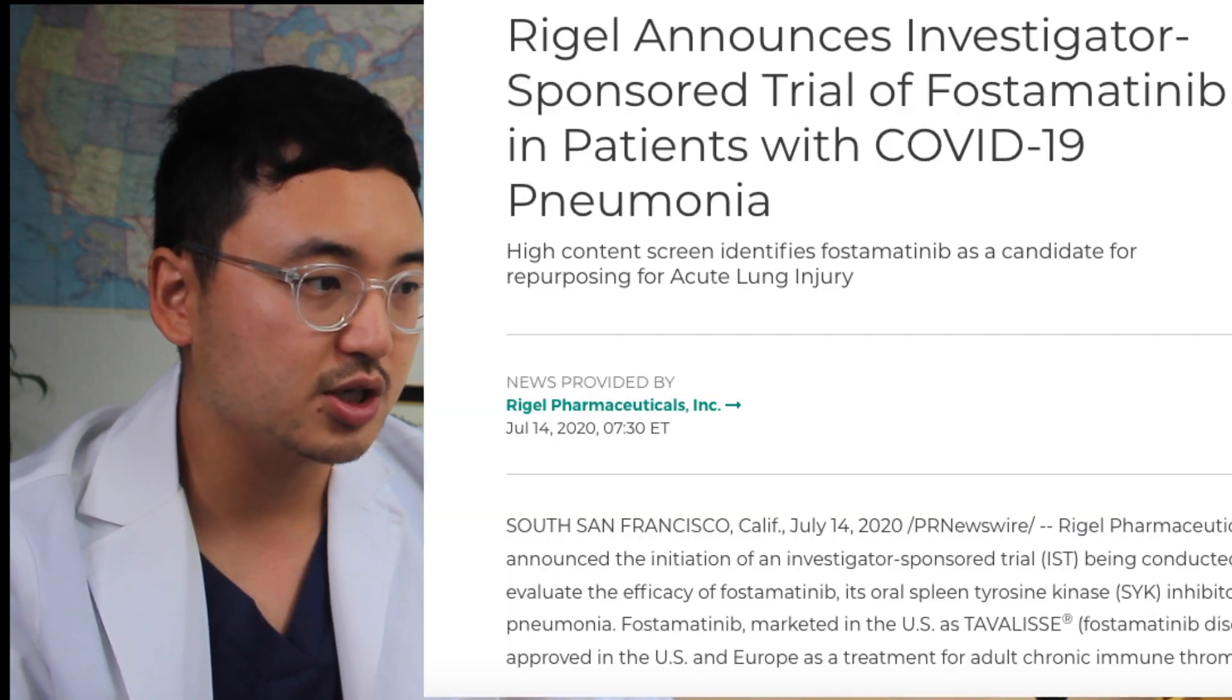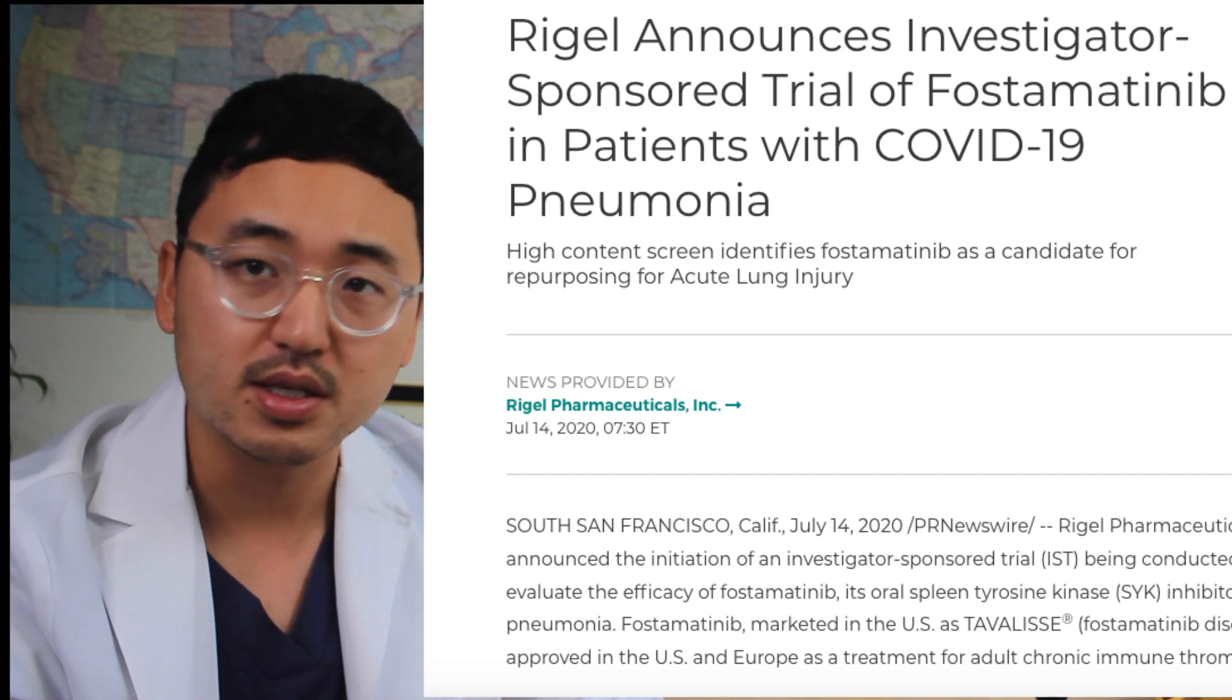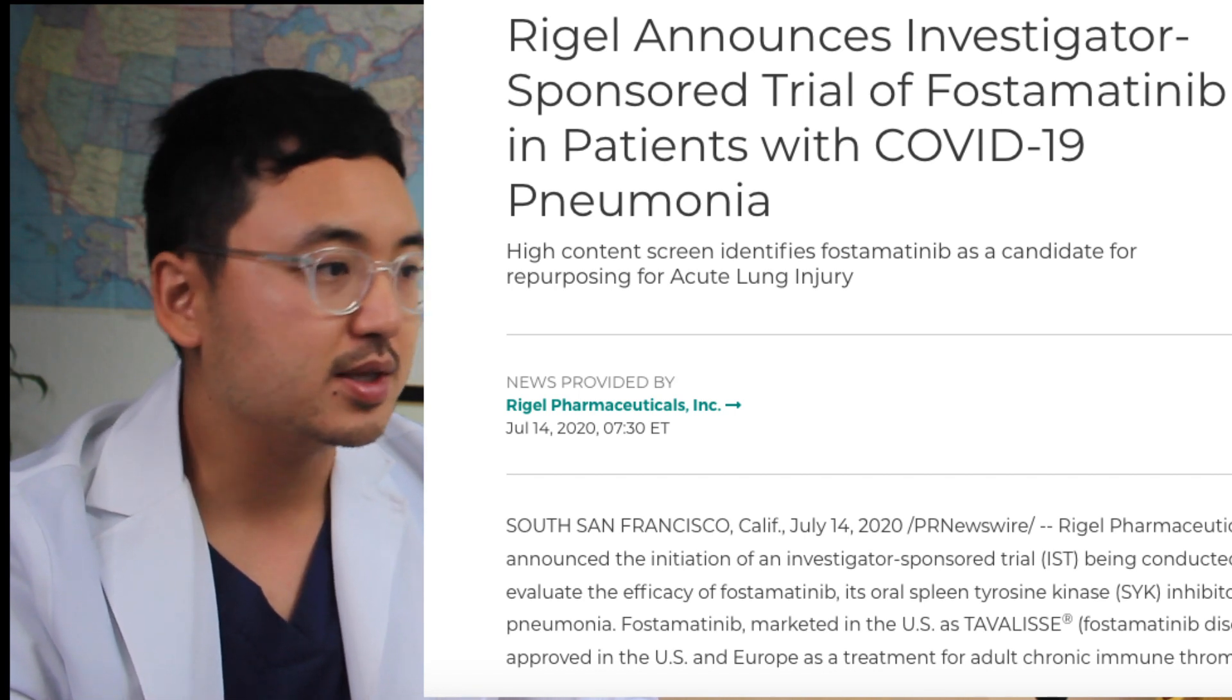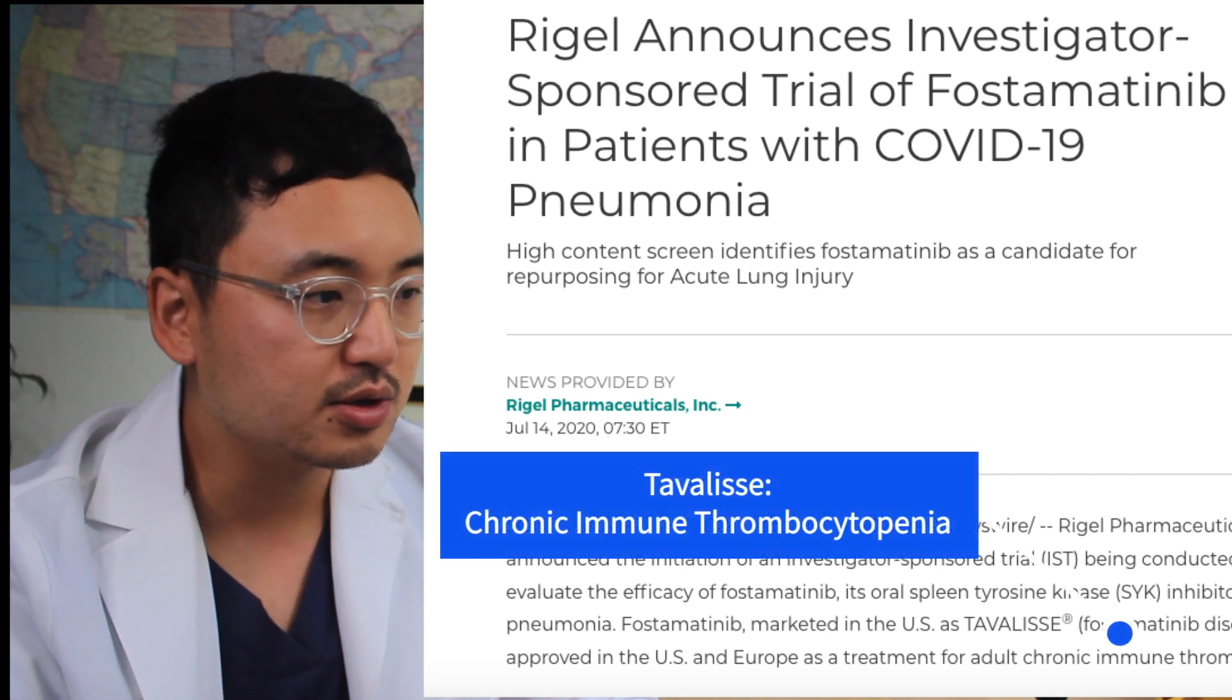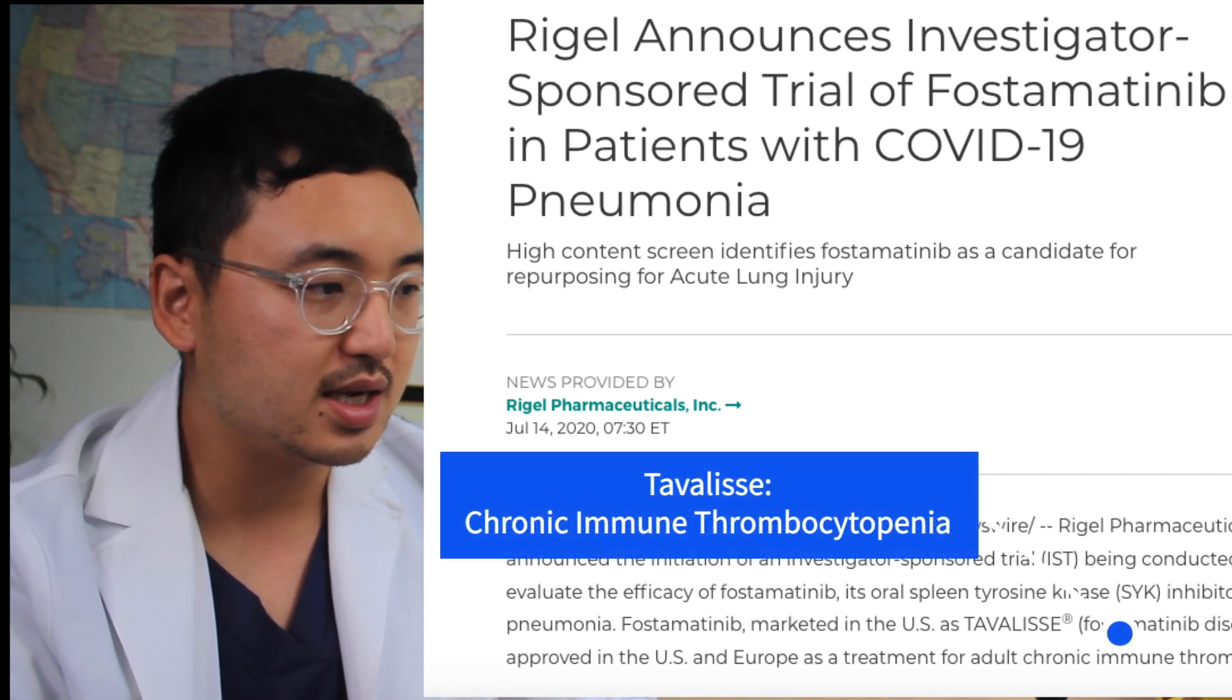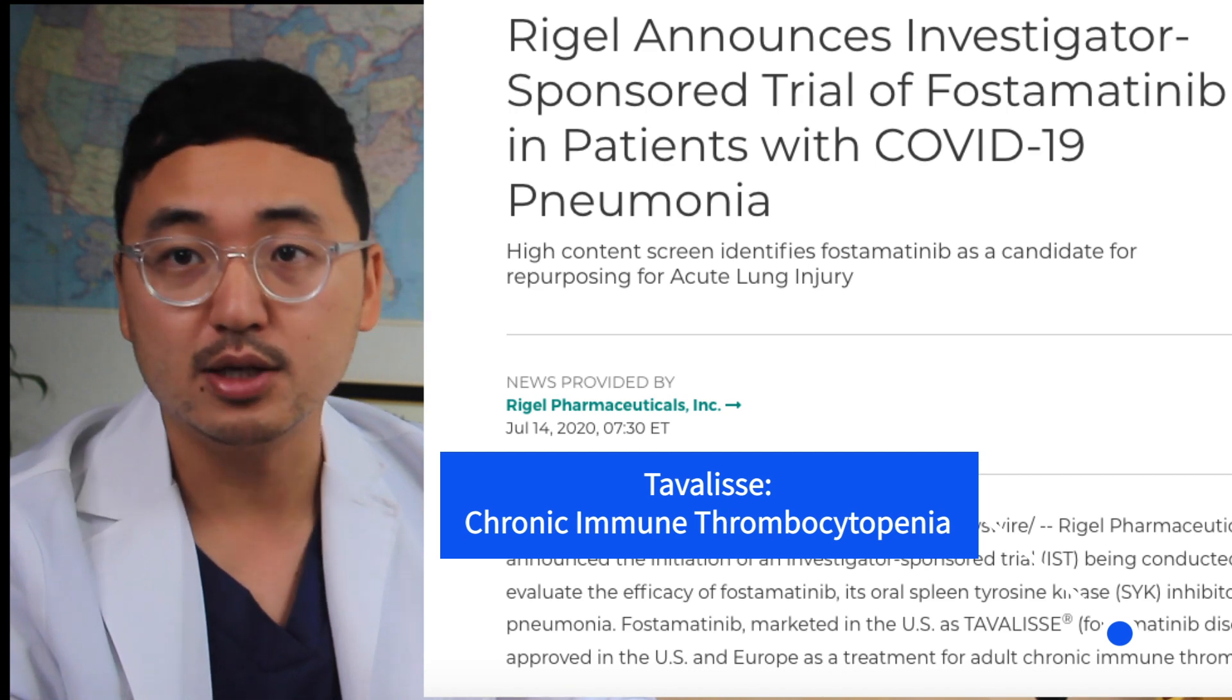So look up Rigel Pharmaceutical. The stock jumped after announcing UK trial for possible COVID-19 treatments. So what is it? What does Rigel have? It has a medication that is approved for chronic immune thrombocytopenia in 2018.